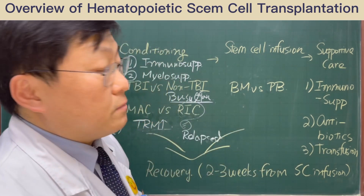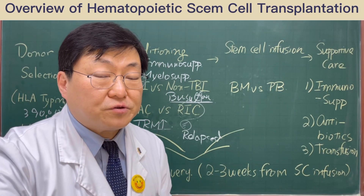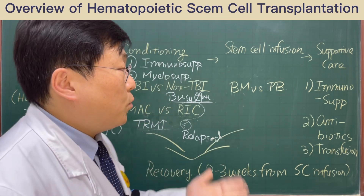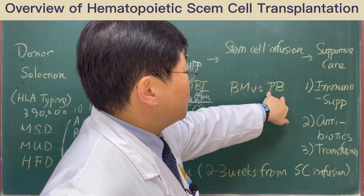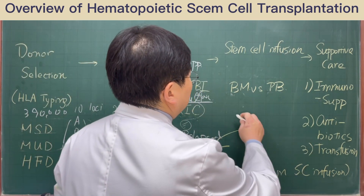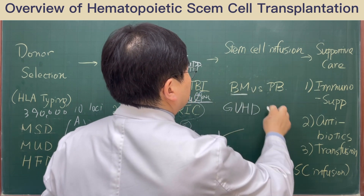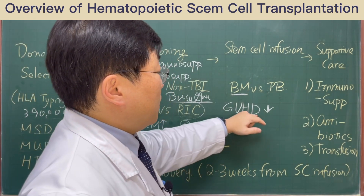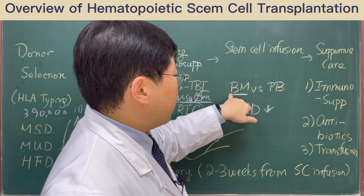Peripheral blood stem cell collection is a process of collecting the donor's stem cells from the peripheral blood using apheresis — a blood cell collector — very similar to collecting blood for blood donation. When comparing these two stem cell sources, bone marrow stem cell previously had some favorable outcomes especially regarding graft-versus-host disease, as bone marrow stem cell does not increase the GVHD rate as much. When using peripheral blood stem cells, the GVHD rate is relatively higher.